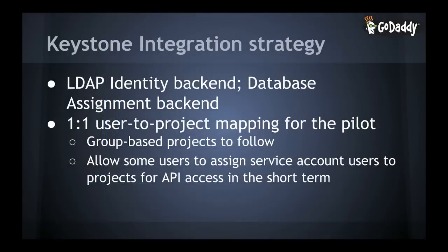This is how we discovered we didn't need to do that. In Havana, the identity and assignment backends were broken out into two separate pieces. We started with Grizzly and then jumped to Havana when it was released. We found that the identity and assignment backends could be separated, so we could authenticate users and find out what groups they're in using AD, but we could write all our projects, roles, and associations to the database. For the dev pilot, we had a one-to-one mapping between users and projects, which made it really easy to automate — basically find the users out of AD and create projects for them in a scripted batch process.